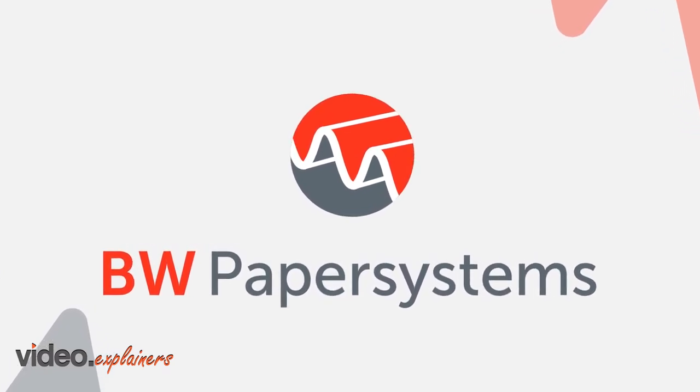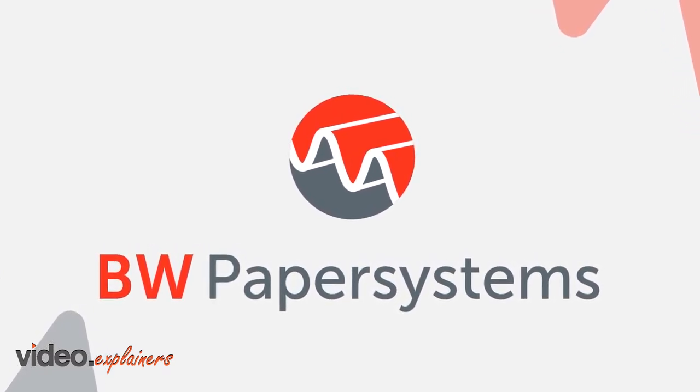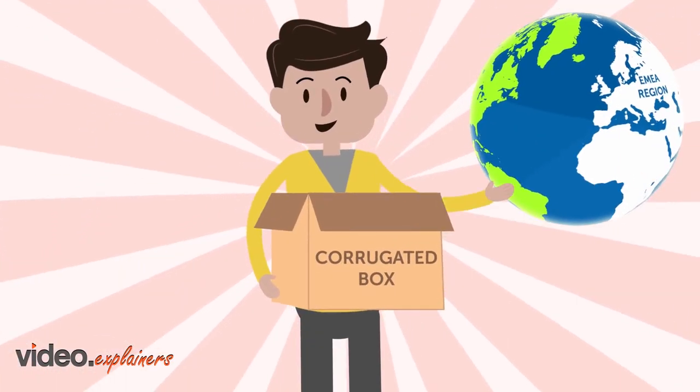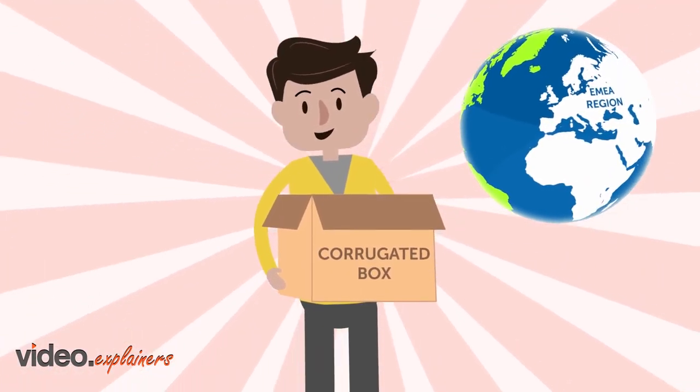BW Paper Systems, formerly Marquip, Ward and United Companies, has made a deliberate decision to reinvent ourselves and become more customer-centered in the Europe, Middle East and Africa region.